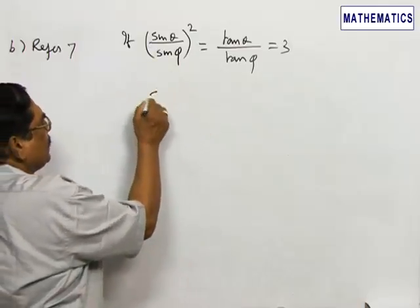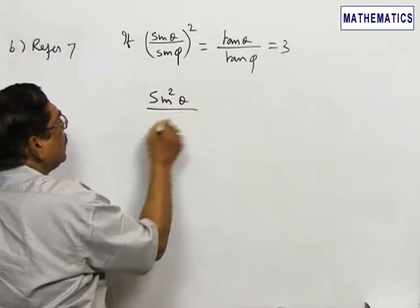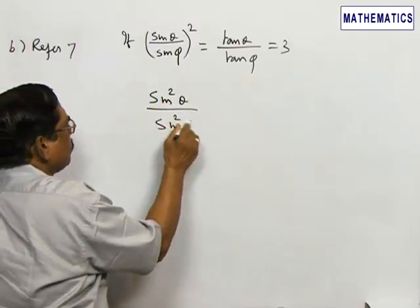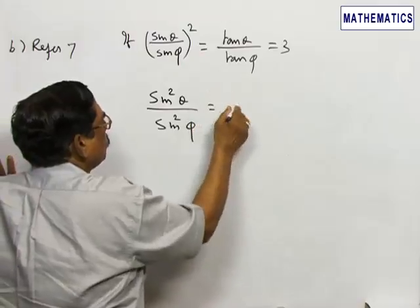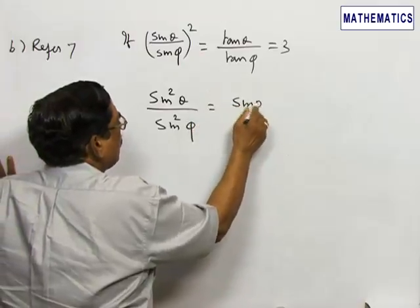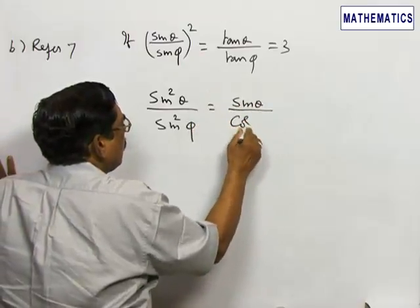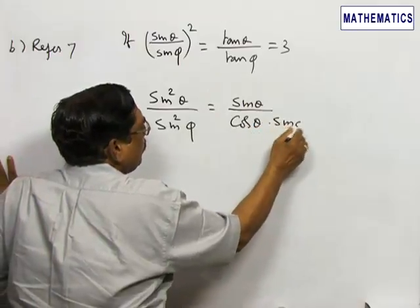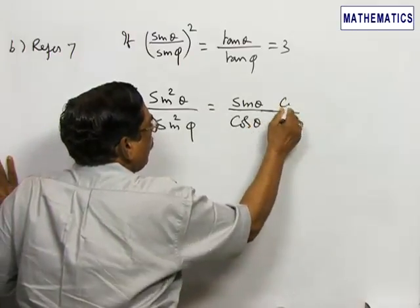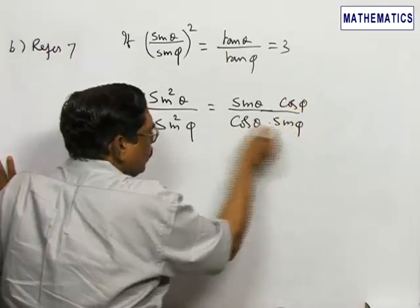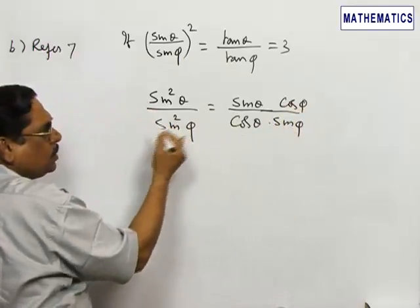I will simplify this first. sin²θ / sin²φ equals (sin θ / cos θ) times (sin φ / cos φ). Multiplying and adding 2 on either side, you will get sin 2θ = sin 2φ.